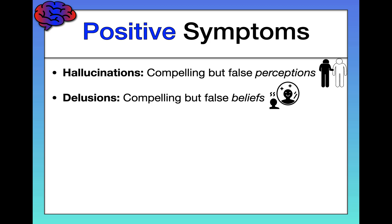And finally, somatic delusions. We've seen the word soma before — for example, the cell body of a neuron. Somatic delusions are beliefs that something highly abnormal is happening to your body, for example, that spiders are laying eggs in your lungs. Hopefully you can see how any of these would be really, really distressing — a severe problem.